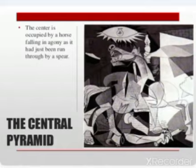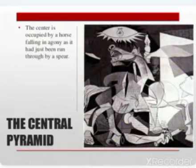The central pyramid — the center is occupied by a horse falling in agony as if it had just been run through, a dead war horse. Situated in the center of the painting, we find a horse appearing as though it is about to collapse and is wounded. We can only make out the horse's head with its open mouth, gazing out at the horrors of war. The rest of its body is overlapped by other images, which in turn form more images such as a human skull — again, a remnant of war.